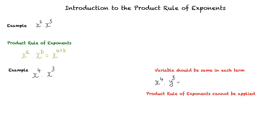For example, we cannot use the product rule of exponents to simplify x^4 times y^3 because the variables here, x and y, are different.